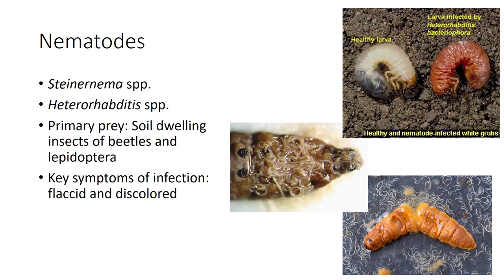Nematodes from four families include potentially useful control agents for insects. The most common commercially available are species of Steinernema and Heterorhabditis. They are small, soil-dwelling nematodes associated with symbiotic gut bacteria that are pathogenic to host insects. They kill their host within two days of infection, can be mass-produced easily and cheaply, applied with conventional equipment, and can search for their hosts. They control mainly soil-dwelling beetles and Lepidoptera, but can control some plant-boring insects as well. You know the nematodes worked when the insect becomes flaccid and discolored.